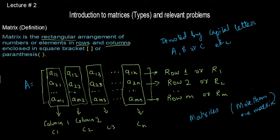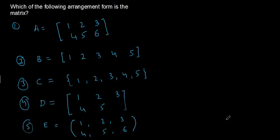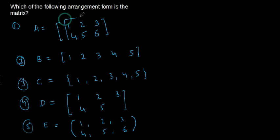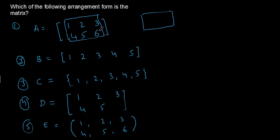Let us see which of the following arrangements is called a matrix. In part 1, matrix A uses square brackets, numbers are arranged in rows and columns with two rows and three columns, and if you construct lines around all sides the shape is a rectangle. So A is a matrix.